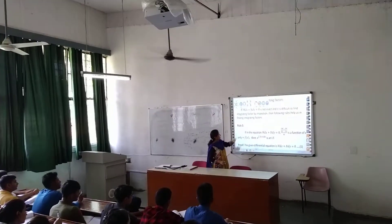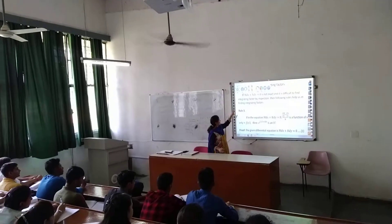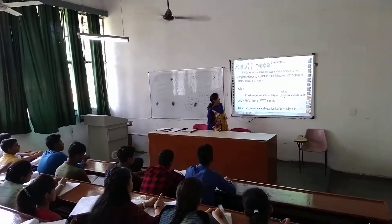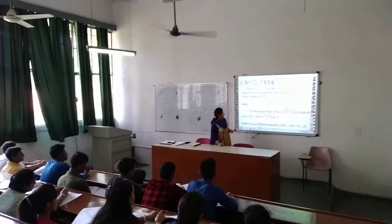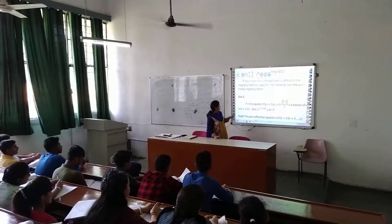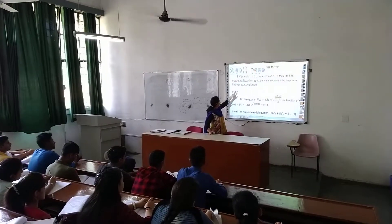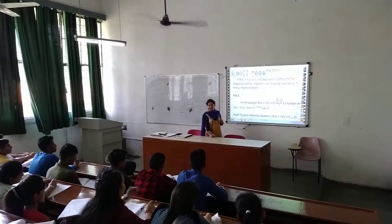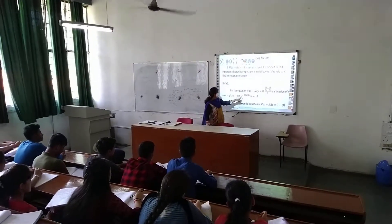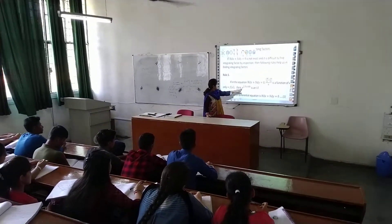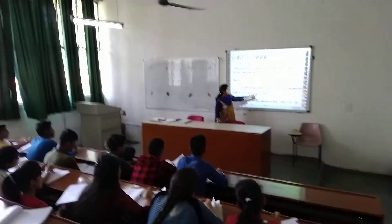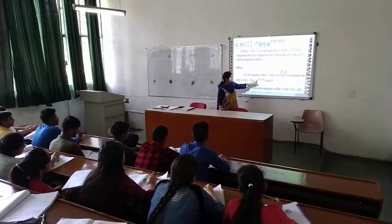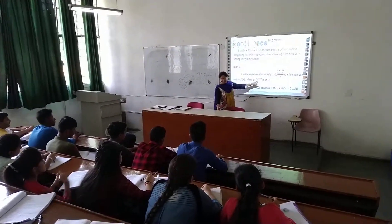Here the equation is not exact. If M dx plus N dy equals 0 is not exact, then we put the integrating factor. The integrating factor is e to the power of the integral of F(x) dx. We have to find the integration of F(x).